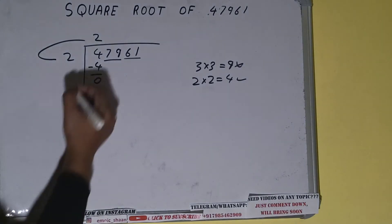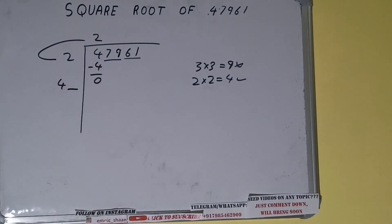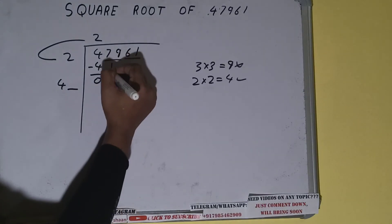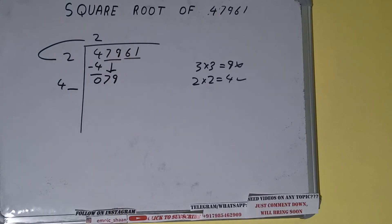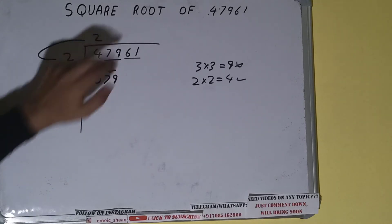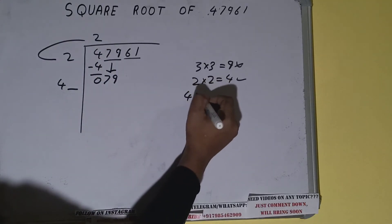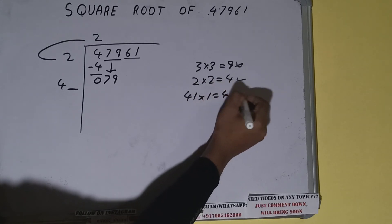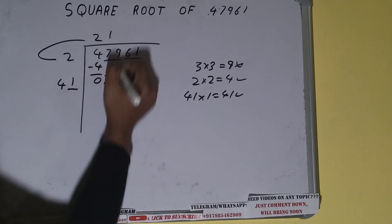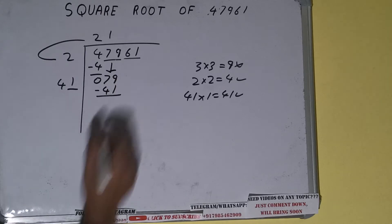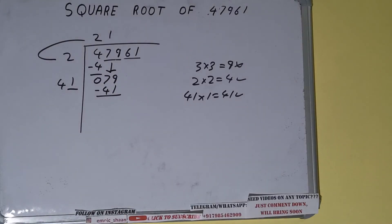This number we need to make big, so bring the next pair down and it becomes 79. Now whatever number we write here, we have to write here also. We can only write 1, that is 41 into 1, which is 41 only. That's good to take. So 1 here and 1 here, 41 subtract it and we'll have 38. Now 41 into 1, so add both: 41 plus 1 is 42.